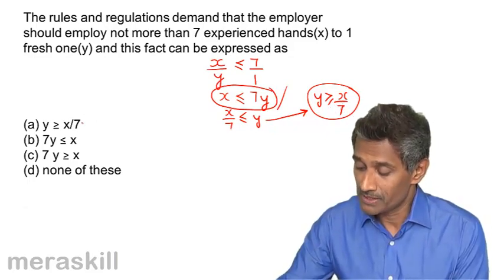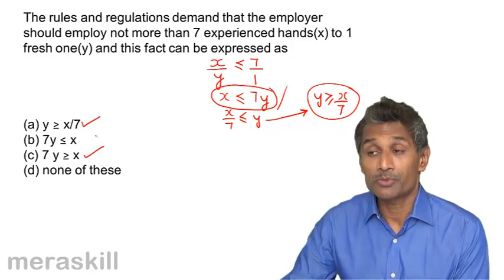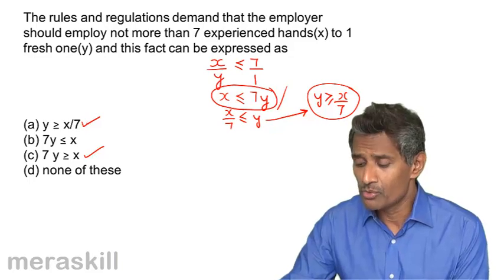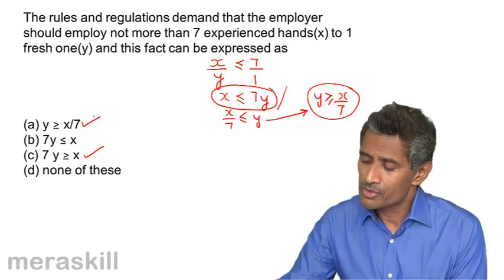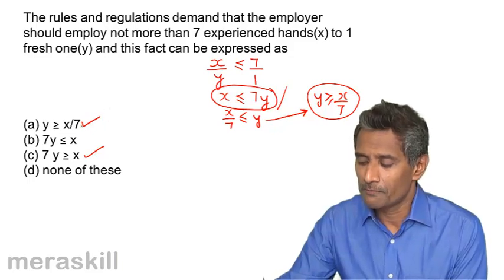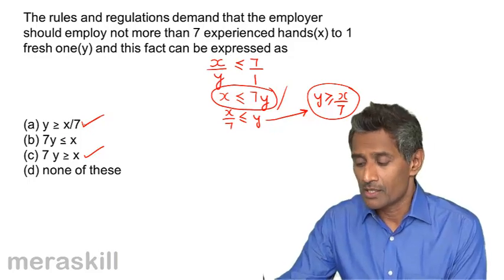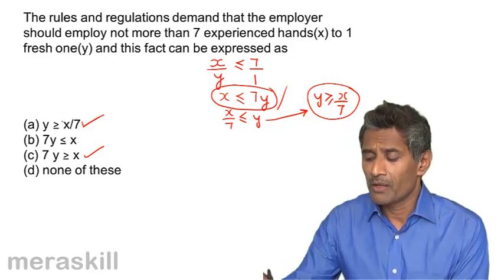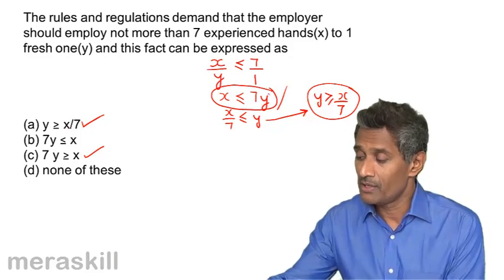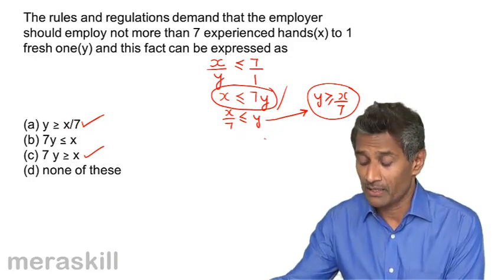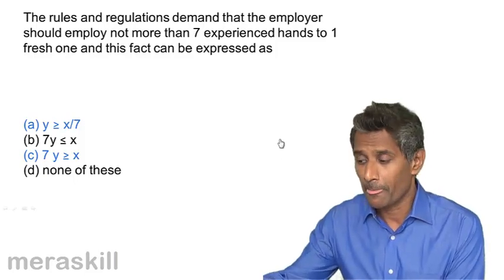Among the options, we have x is less than or equal to 7y and y is greater than or equal to x by 7 — two valid options. In an MCQ where only one answer is required, the first in order is considered correct, so we take y greater than or equal to x by 7 as the answer, and yes, both options are present to confirm.